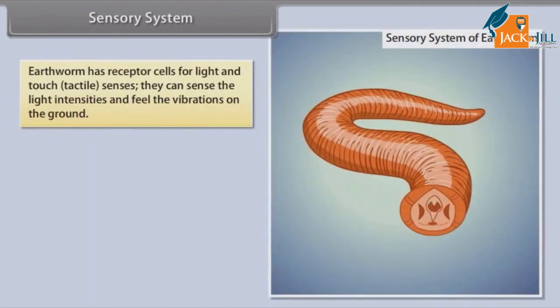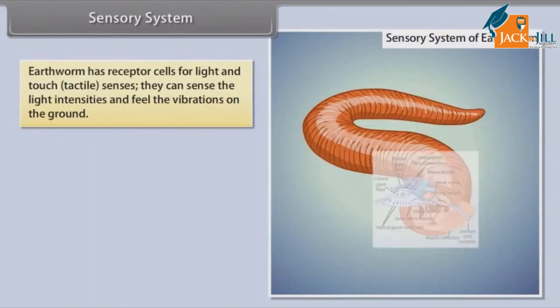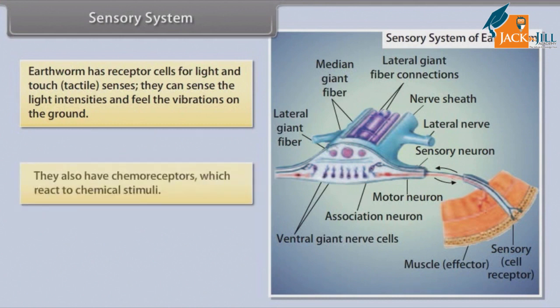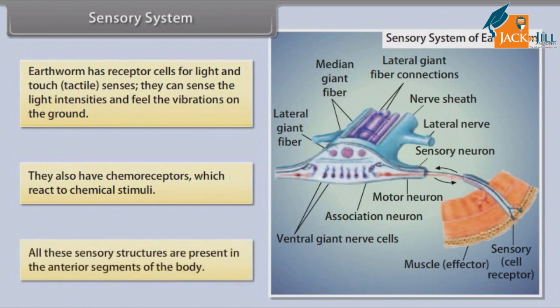Sensory System: Earthworm has receptor cells for light and touch — that is, tactile senses. They can sense light intensities and feel vibrations on the ground. They also have chemoreceptors which react to chemical stimuli. All these sensory structures are present in the anterior segments of the body.